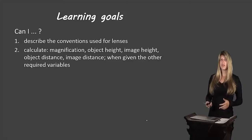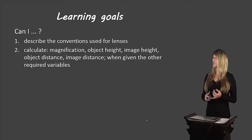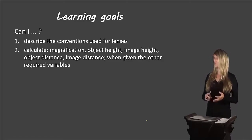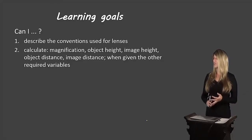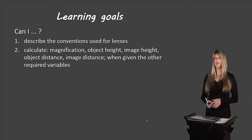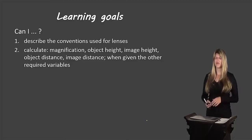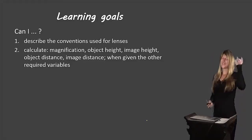Let's take another look at our learning goals. You should be able to describe the conventions used for lenses, and calculate magnification, object height, image height, object distance, or image distance when given the other required variables. If you can do this, fantastic. If not, please re-watch the video, and if you're still having trouble come ask me in class tomorrow. That's all for now — bye bye.